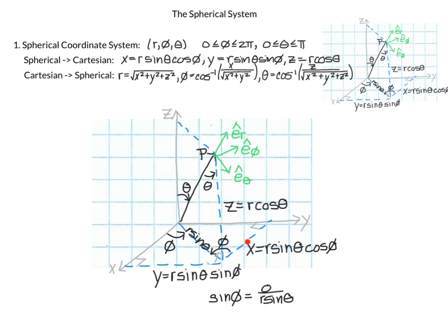We can also get the x-coordinate from this same triangle. The hypotenuse is r sin(θ), and we want the adjacent side. Using cosine of phi: cos(φ) = x / (r sin(θ)), so x = r sin(θ) cos(φ).